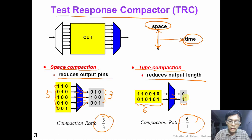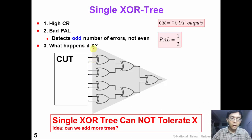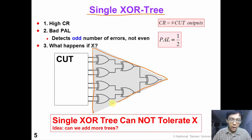So we have these two categories of test response compactor. In the following slides we will show space compactor followed by time compactor and some X-handling techniques. First of all, a very simple idea about a space compactor is a single exclusive-OR tree. As shown in this example, this CUT has 8 outputs, and after an exclusive-OR tree we compress the output into 1 bit.